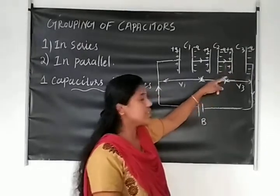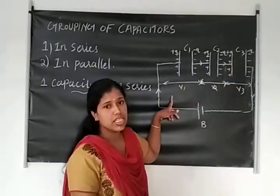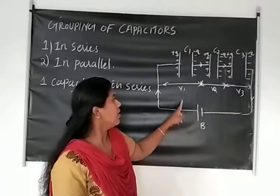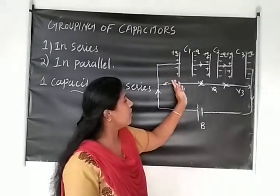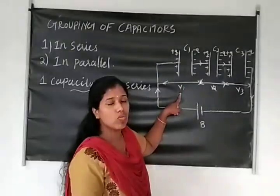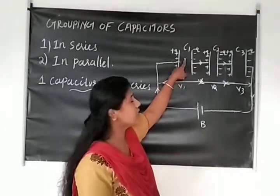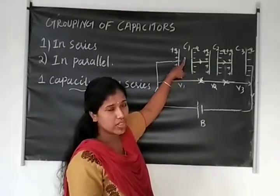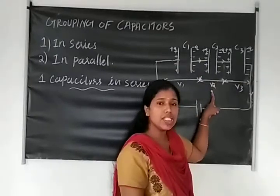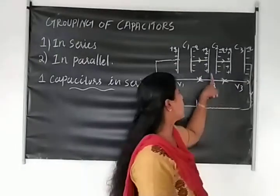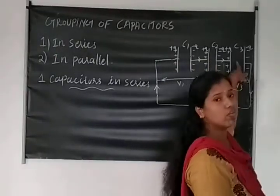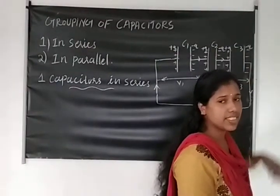C1, C2, C3 are connected in series and connected with the band. Then the potential difference: V1 is the voltage across capacitor C1, V2 is the potential difference across C2, and V3 means potential difference across C3.